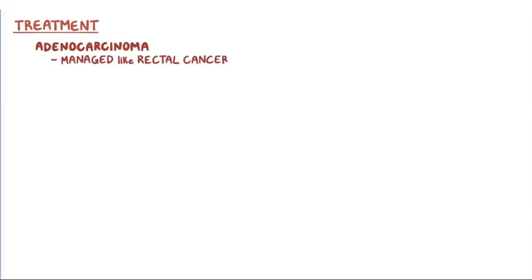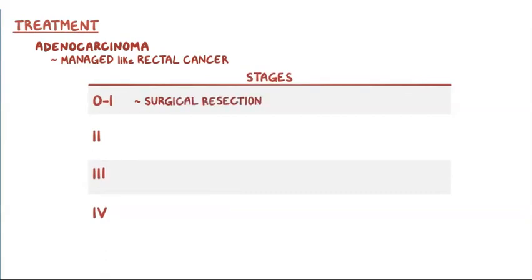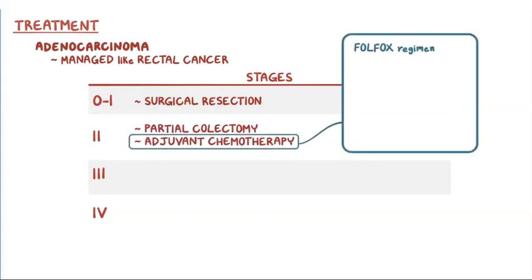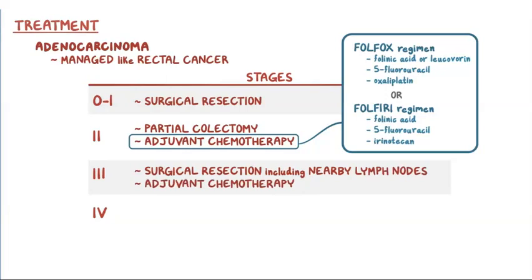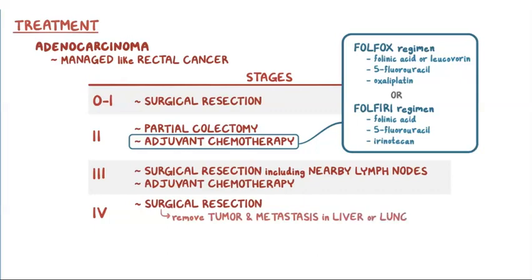Treatment of anal cancer from adenocarcinoma includes initial abdominoperineal resection rather than initial chemoradiotherapy. Adenocarcinomas arising in the anal canal are managed like rectal cancer. For stage 0 and 1, a surgical resection of the tumor is usually curative. For stage 2, a partial colectomy may be needed along with adjuvant chemotherapy, which typically includes the FOLFOX regimen — consisting of folinic acid or leucovorin, 5-fluorouracil, and oxaliplatin — or the FOLFIRI regimen consisting of folinic acid, 5-fluorouracil, and irinotecan. For stage 3, surgical resection including nearby lymph nodes and adjuvant chemotherapy is recommended. For stage 4, a surgical resection may be done to remove the tumor and metastasis in the liver or lung, but if surgery is not an option, then chemotherapy is the main treatment.